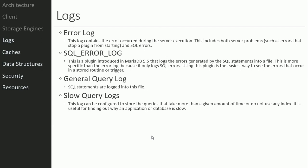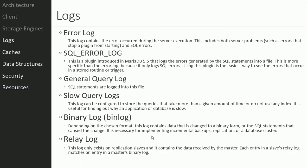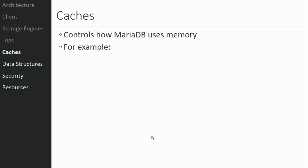You can configure slow query logging so that anytime someone does a query looking for data not in an index, it gets logged. You can then analyze it — for example, if many people are querying phone numbers, maybe you should add an index on phone number to increase database performance. You also have a binary log containing changed data in binary form, which usually requires a log viewer. The relay log exists in replication slaves and matches entries in the master's binary log, enabling common logging across an entire cluster.